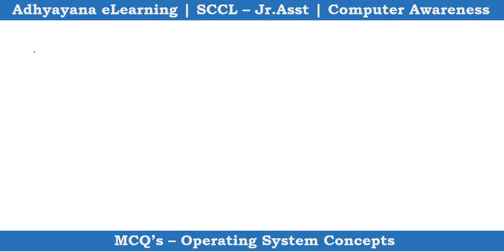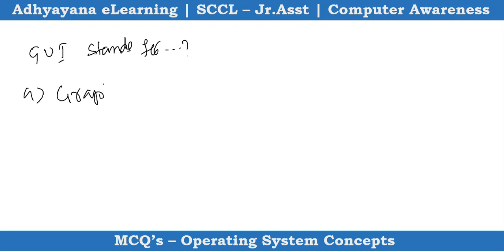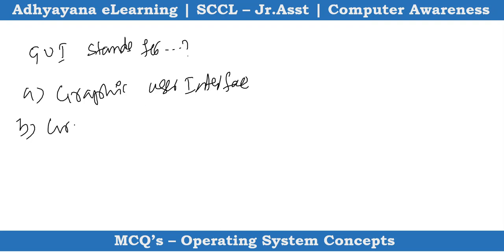Next question: GUI stands for what? Option A is Graphic User Interface. Option B is also Graphic User Interface. Option C shows both, and option D shows none.